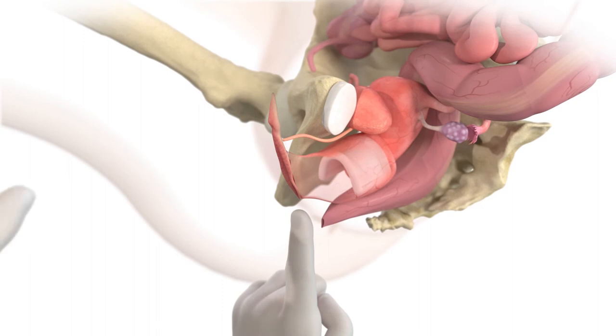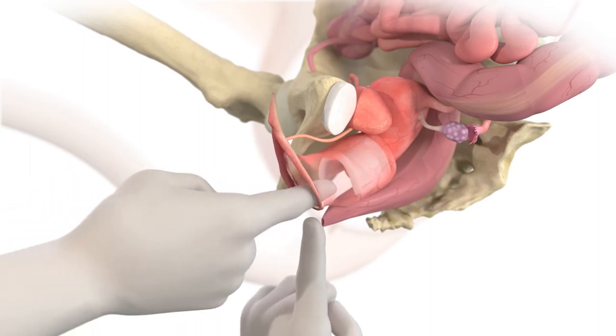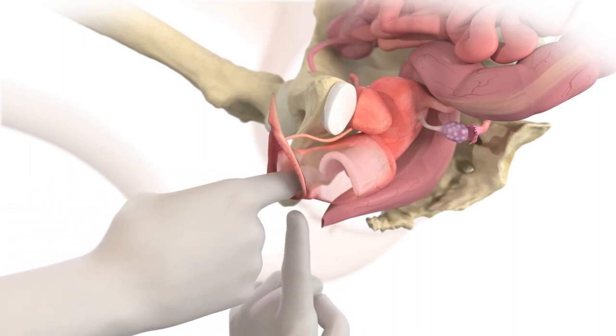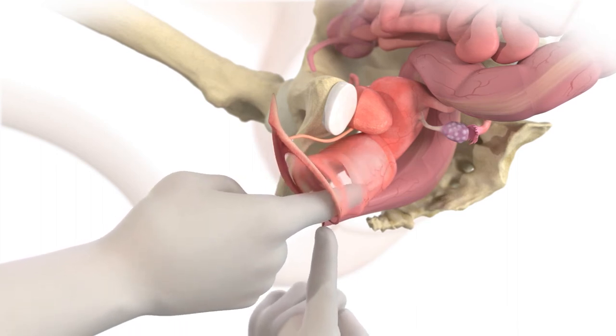If the pessary is comfortable, have the patient empty her bladder. You should be able to sweep one finger between the pessary and vaginal walls.